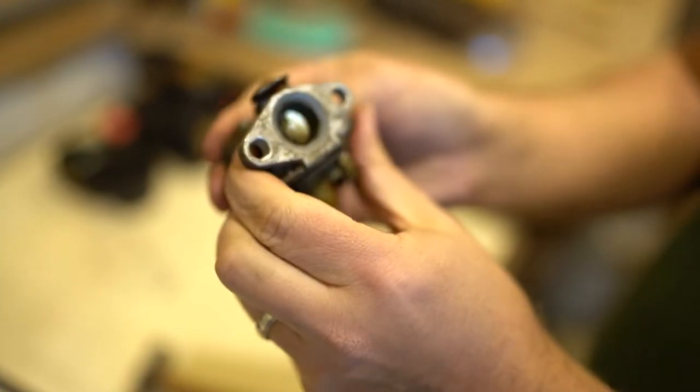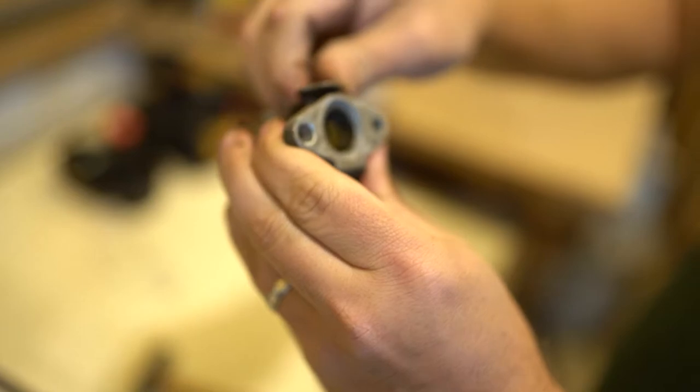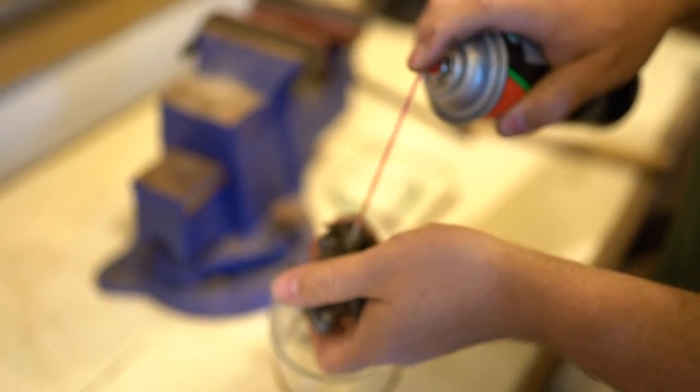Inlets are clear. And that's the valve in here. That's all gummed up. Let's spray it down with a little carb cleaner.